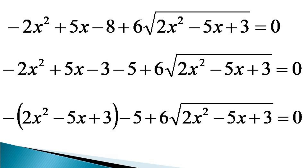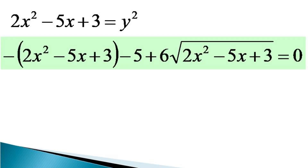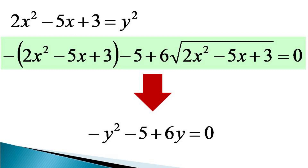In this equivalent equation, it can be observed that the first term in parenthesis is the same as the term under the square root sign. So here we can make a substitution: 2x² minus 5x plus 3 equals y². Using this substitution, the equivalent equation is transformed as minus y² minus 5 plus 6y is equal to 0.